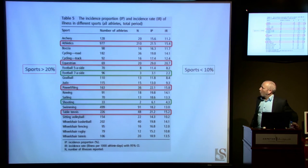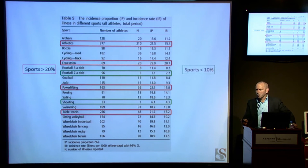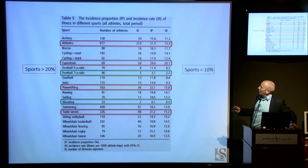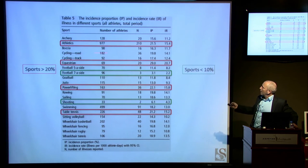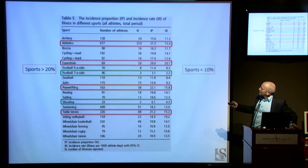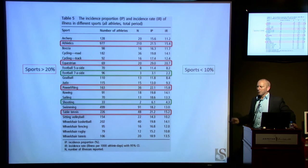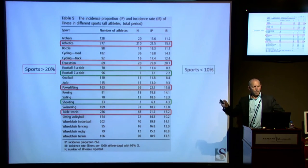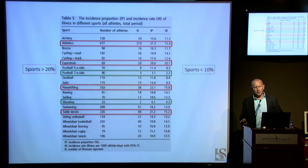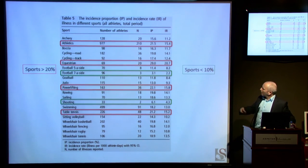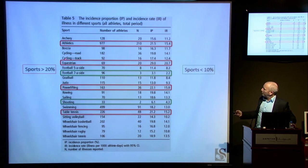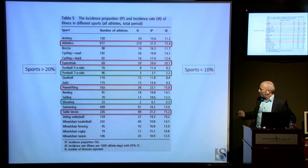Looking at which sports to target, with some seasonal variation, equestrian was very high in the London data. Sports marked with high rates include athletics, powerlifting, table tennis, and equestrian. In equestrian there was only a small number of athletes, and a respiratory tract infection spread through the confined area where they were staying, which explains that outlier. But we certainly have target areas — particularly athletics, powerlifting, and table tennis.